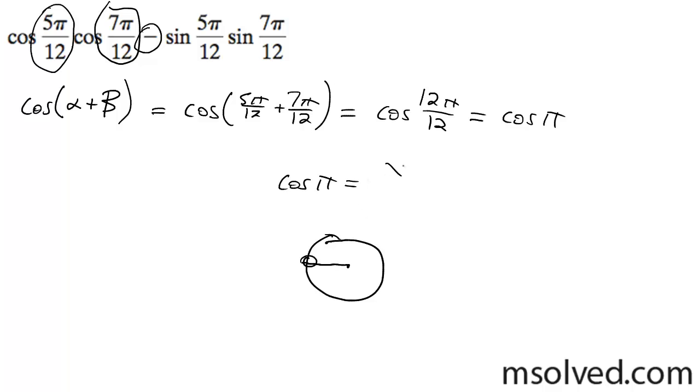Cosine is equal to x over r. X is negative 1 in this case, and r is always 1. So you've got negative 1 over 1, which is simply just negative 1. That's it.